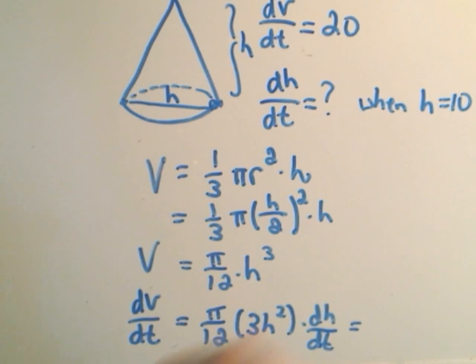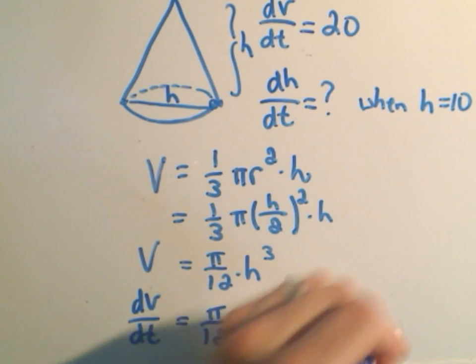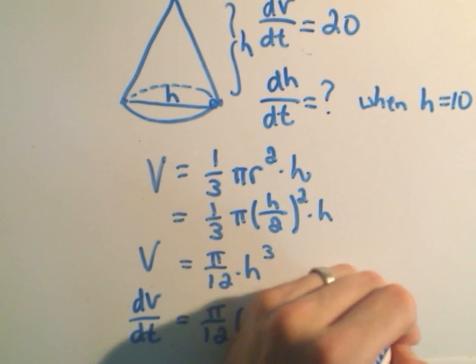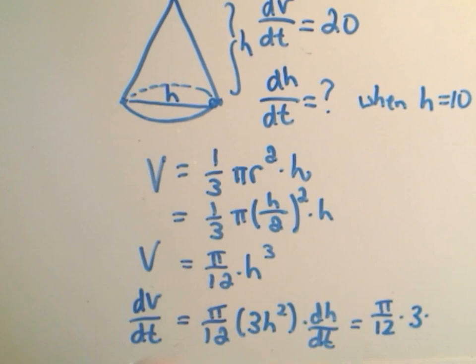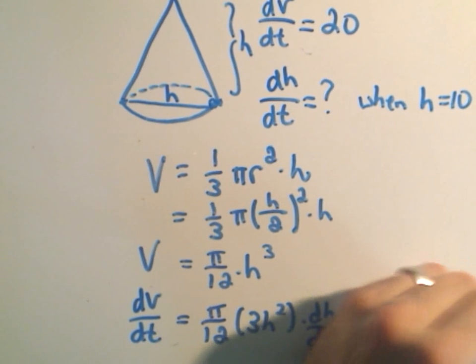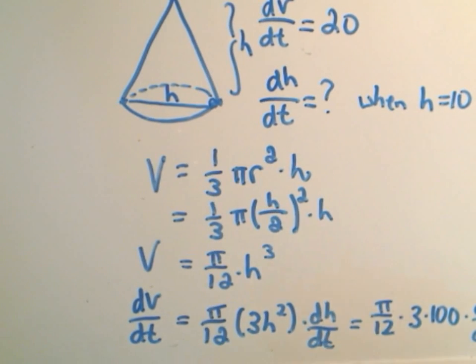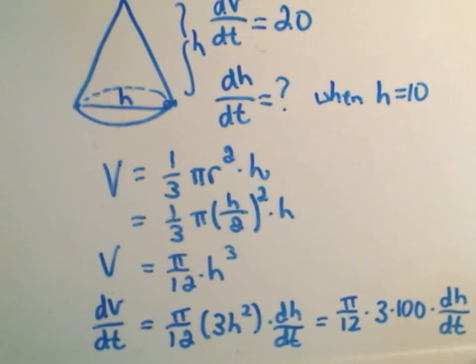And if we plug in our numbers, we'll get π/12 times 3 times H squared, so 100 times dH/dt. That's what we don't know. dH/dt.